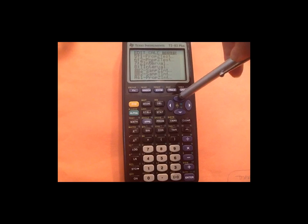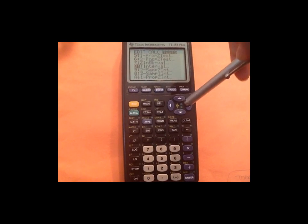So I scroll down until I see Z interval and T interval. In this case, we only had eight in our sample size. So that makes it a small sample. So we make sure to choose T interval.